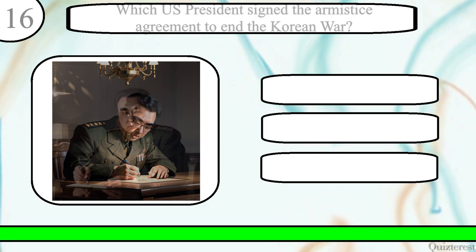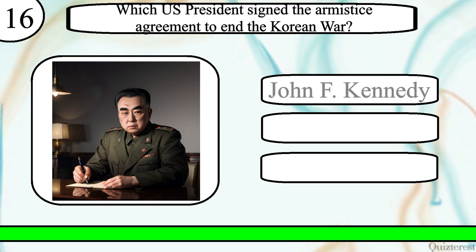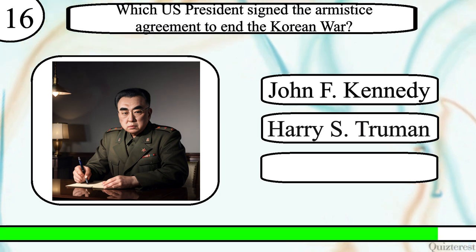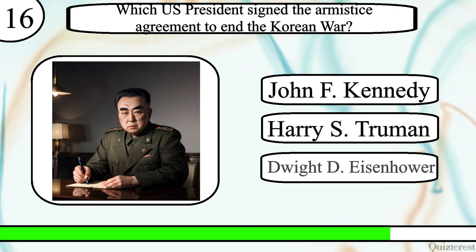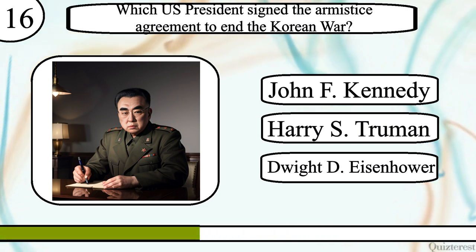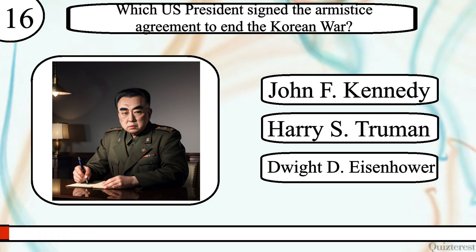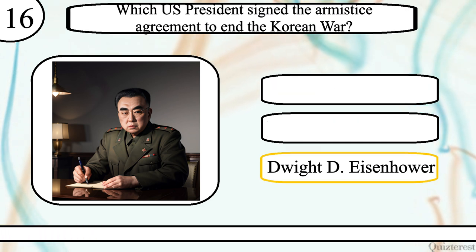Question 16. Which US president signed the armistice agreement to end the Korean War? John F. Kennedy, Harry S. Truman, or Dwight D. Eisenhower? The correct answer is Dwight D. Eisenhower.